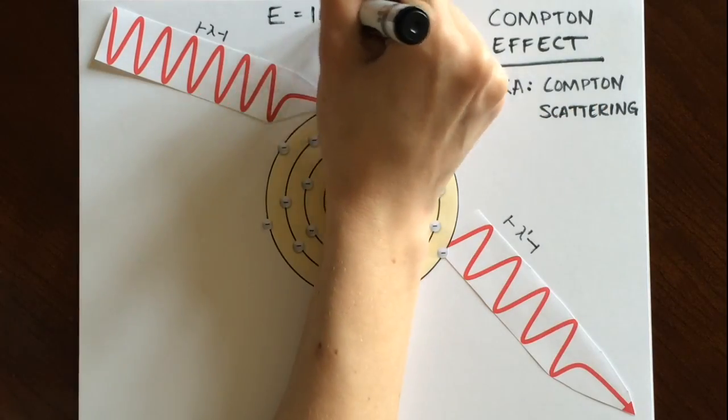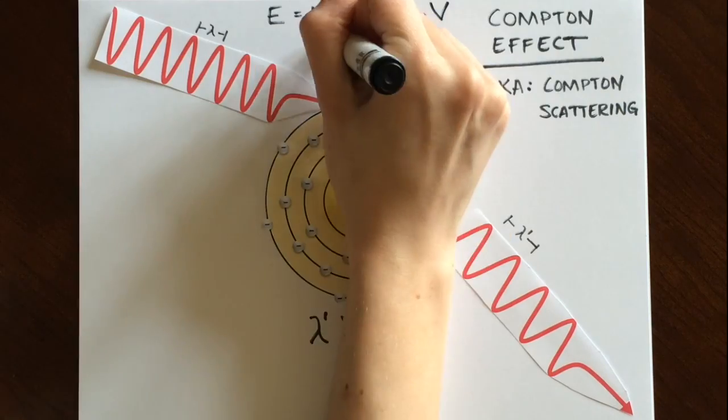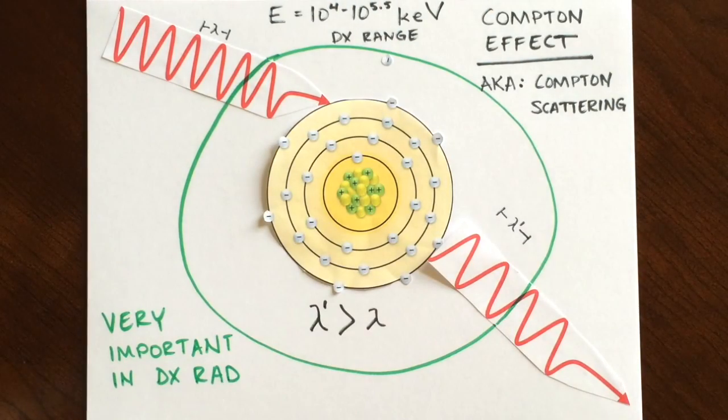The Compton effect occurs throughout the diagnostic energy range and has a great effect on the x-ray image, though in a very negative way. The scattered photons provide no useful information on the radiograph and cause a reduction in image contrast.